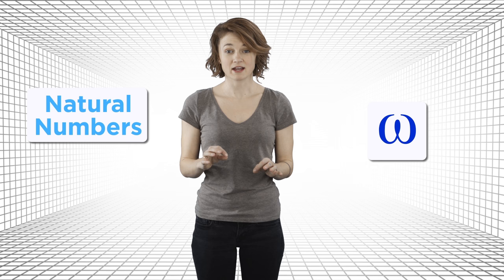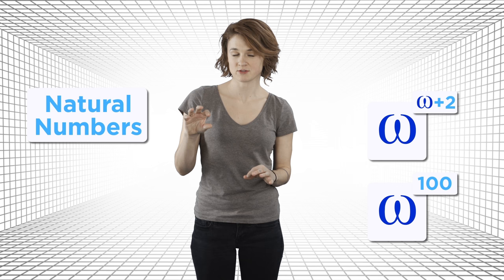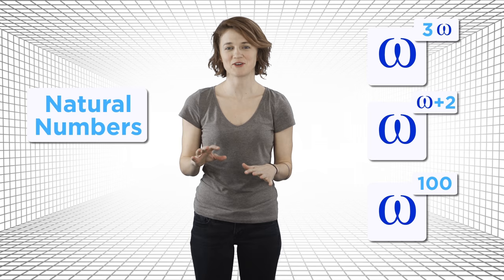Luckily, the ordering is pretty intuitive. You just have to think about the normal order of the natural numbers, and then just add a new thing that's bigger than all the natural numbers, omega. So, omega to the omega plus two is bigger than omega to the 100, but smaller than omega to the three times omega.